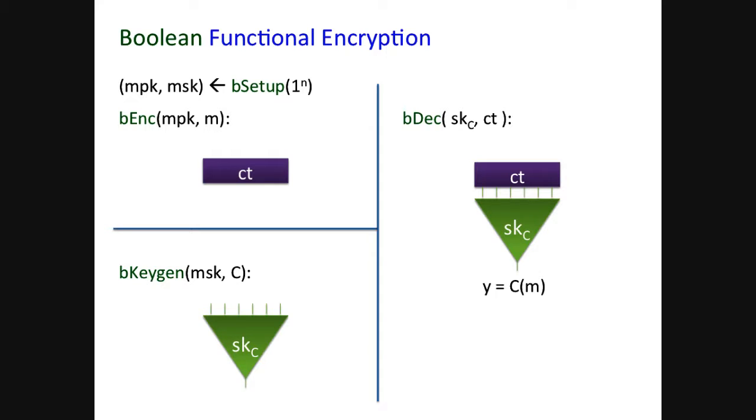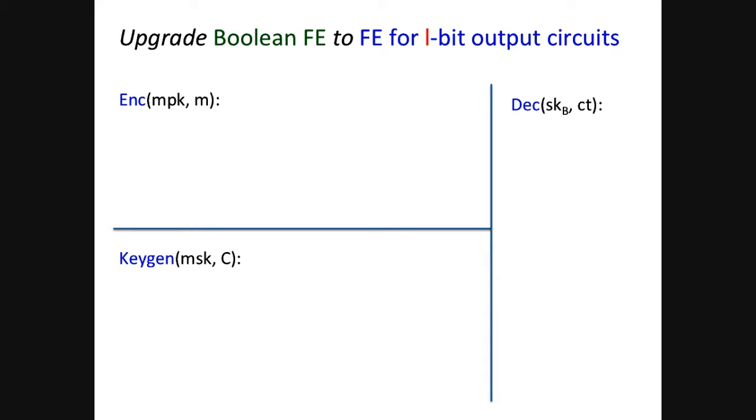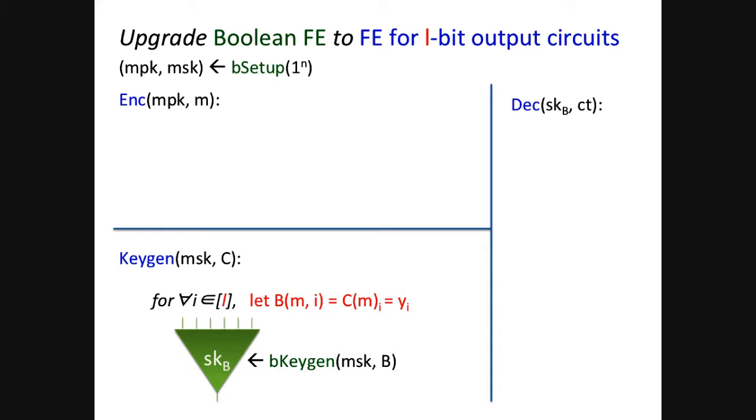So efficiency of functional encryption, in particular, requires that the encryption time should be polynomial in the length of the public key and the length of the message. In particular, it should be independent of any parameter of the circuit C that you will generate a partial decryption key for later. The security follows from standard semantic security. For public encryption, we require that encryption of message one and another are indistinguishable, even with access to some partial decryption key, as long as the circuit does not separate those two messages. When we consider the special case of a Boolean functional encryption, we simply mean that this is a scheme that handles only Boolean functions in key gen. Great. So we're going to denote a Boolean scheme always with the B ahead of the algorithm name. So now comes the interesting part. How can we upgrade a Boolean functional encryption to FE for, say, L-bit output circuits?